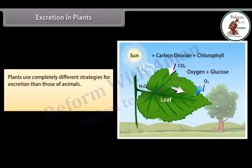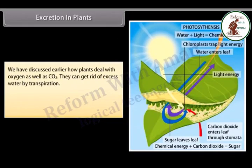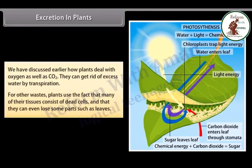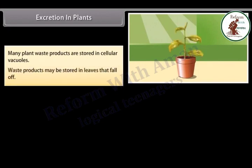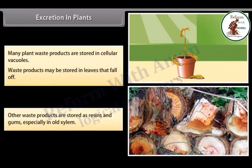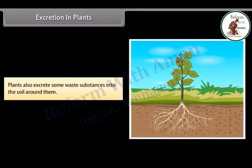Excretion in plants: plants use completely different strategies for excretion than animals. Oxygen itself can be thought of as a waste product generated during photosynthesis. Plants can get rid of excess water by transpiration. For other wastes, plants use the fact that many of their tissues consist of dead cells, and they can even lose some parts such as leaves. Many plant waste products are stored in cellular vacuoles or in leaves that fall off, and other waste products are stored as resins and gums, especially in old xylem. Plants also excrete some waste substances into the soil around them.